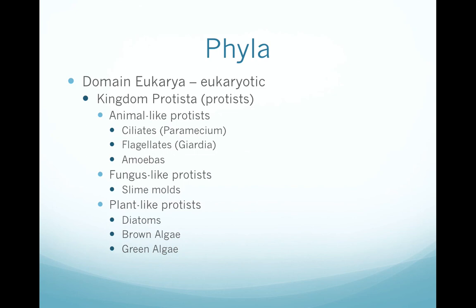Kingdom Protista contains a wide variety of organisms that we can roughly classify into ones that resemble animals, ones that resemble fungi, and ones that resemble plants. Some of these organisms are pathogenic and can cause diseases. As mentioned, Giardia can cause severe diarrhea, and in pets it is often an undiagnosed cause of waxing and waning loose stools with occasional vomiting. Diatoms are the primary component of diatomaceous earth, a type of soil used as a filtering agent for pools or for insecticide purposes.